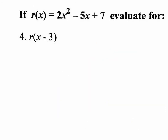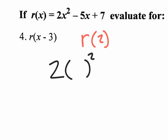Number four: if r of x equals 2x squared minus 5x plus 7, evaluate r of x minus three. This is the section where we dealt with functions — adding, subtracting, and plugging in values. If you had r of two, you'd plug in two for x. So you'd plug in a two here and there, giving you negative ten and eight. It's easy to remember: just plug the value into the place of x.